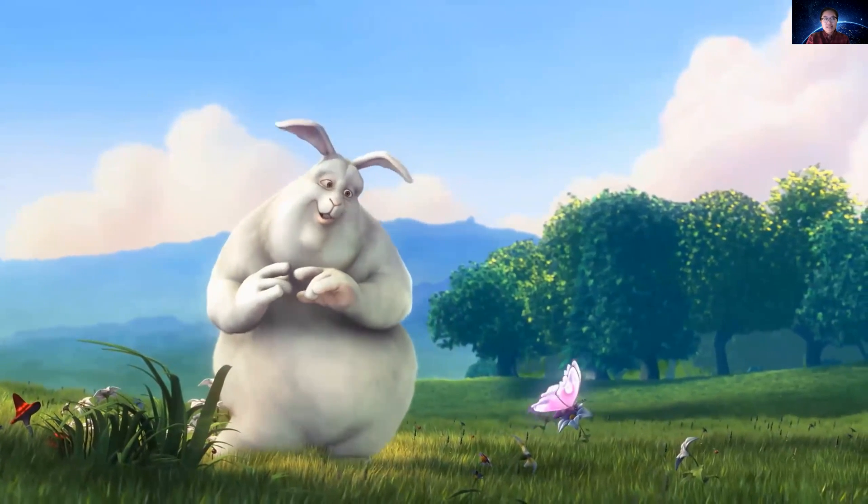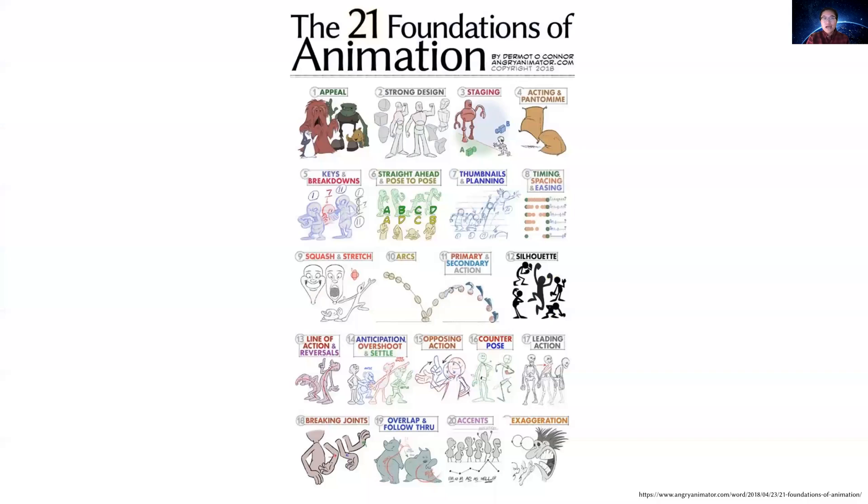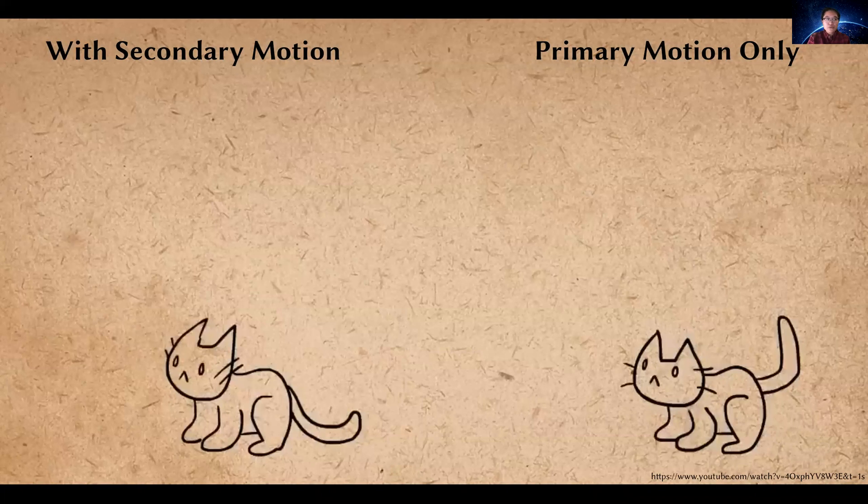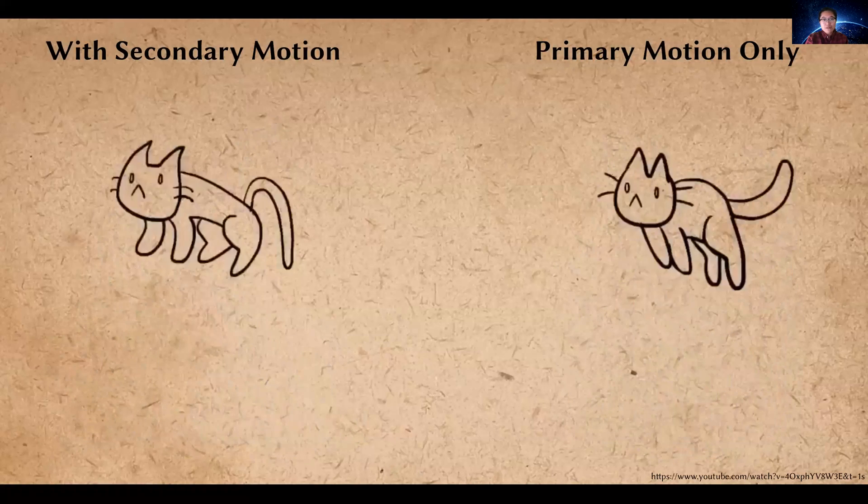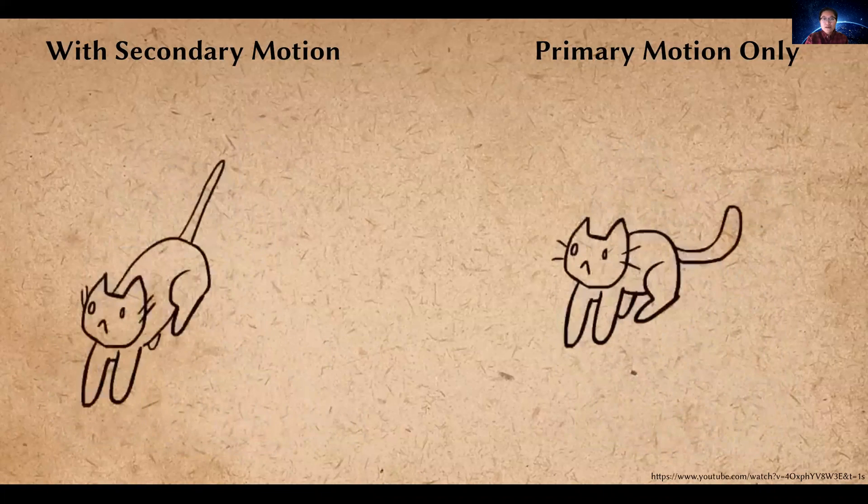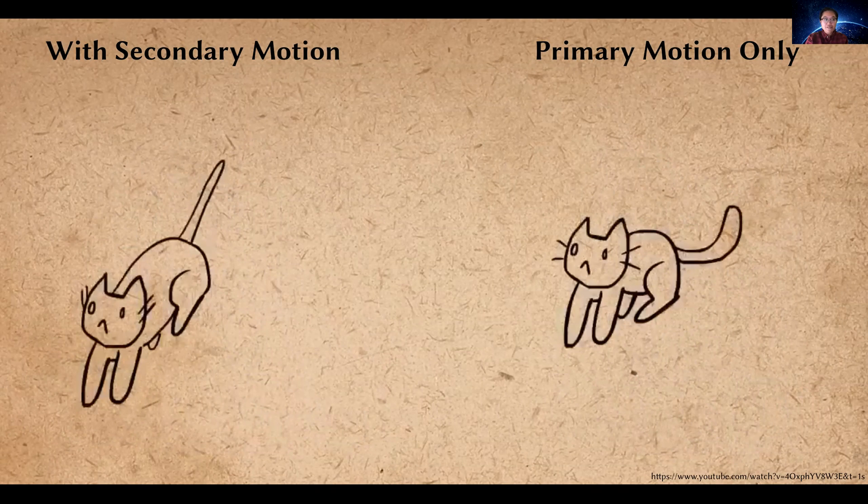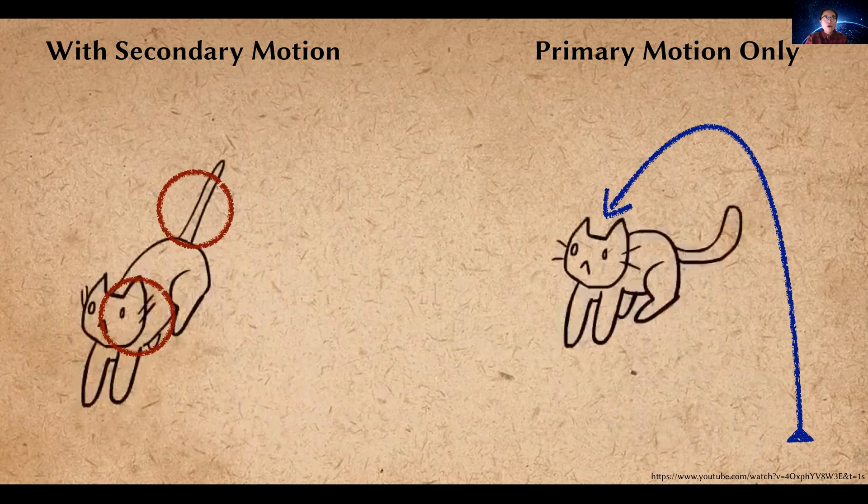When it comes to realistic character animation, there has been these so-called principles of animation or the foundations of animation. Specifically in this work, we are focusing on identifying the right relationship between primary and secondary motion. If you pay attention to these two simple animations and make some comparisons, you will notice that the primary motion is actually clearly defined as this cat jumping motion, while the secondary motion means the natural follow-through of the cat's whiskers as well as its tail.